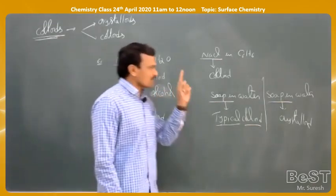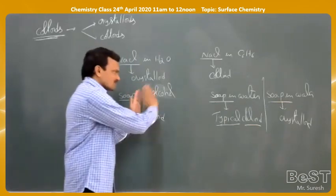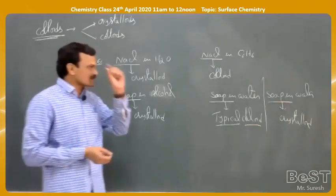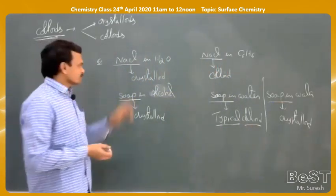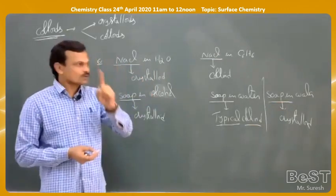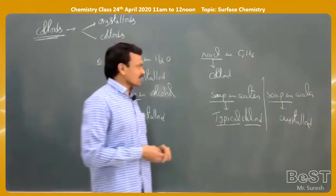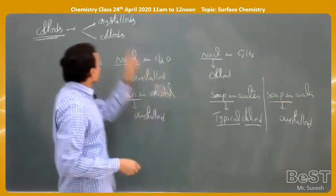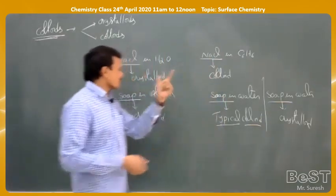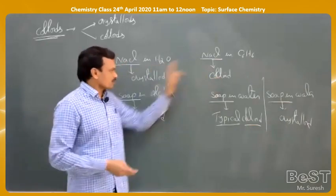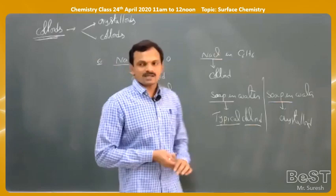So the same substance in the same medium can act as a crystalloid or a colloid depending on concentration. The difference is not diffusion but the size of the particle. If the size of the dispersed particle is less than 1 nanometer, it acts as a crystalloid and forms a true solution. If the particle size lies between 1 and 1000 nanometers, it acts as a colloid. The term 'colloid' represents the state of the substance, not the substance itself.